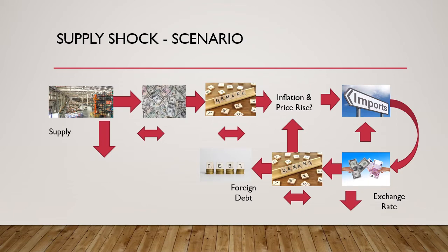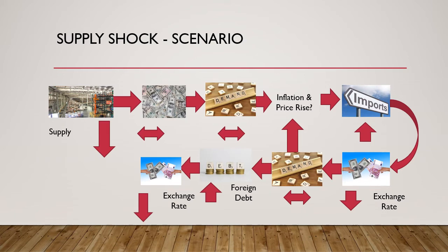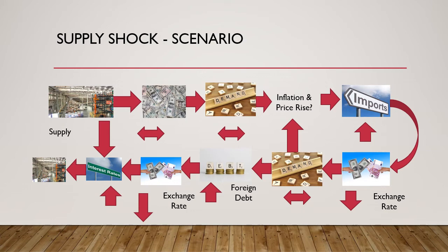To cater to this demand, since domestic supply cannot come online, the country starts taking on more foreign debt, which increases the country's foreign debt, and the exchange rate declines even further. A fall in exchange rate forces interest rates to rise. So increasing inflation, increasing interest rates, and a fall in exchange rate all contribute to a further supply shock, because domestic capital has become even more expensive and prices of inputs have become more expensive. Supply gets even lower while demand remains almost constant, leading to a hyperinflationary episode.